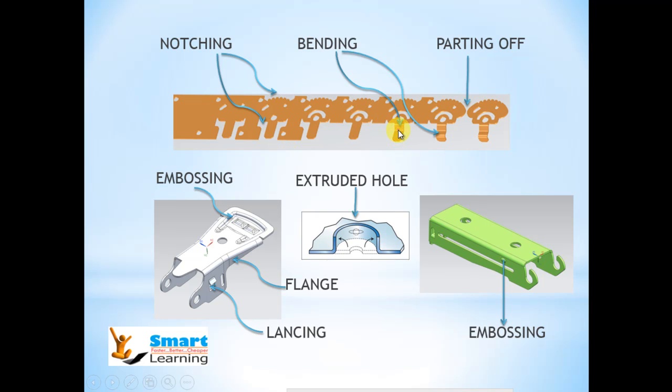Now we can see a bending operation. Bending is nothing but folding a strip into different angles. It could be Z, U, flat, or L shaped.